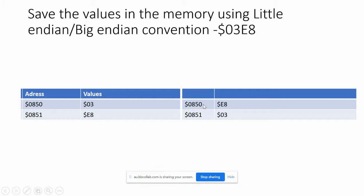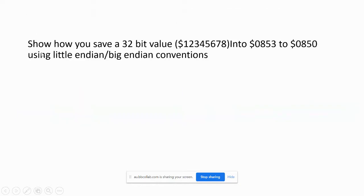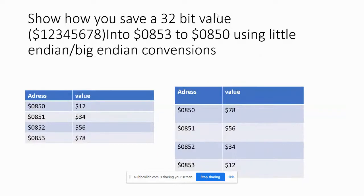That was an example with a 16-bit value. Now what if we have a 32-bit value, 0x12345678, stored into a series of memory addresses? We assume each memory slot carries 8 bits of information. Show how you store this using both little endian and big endian conventions.